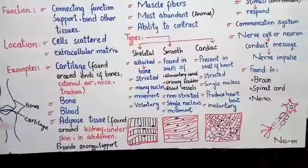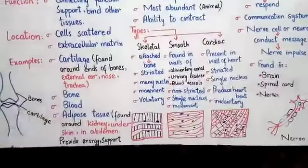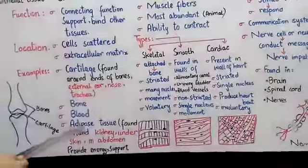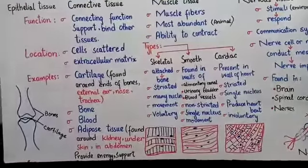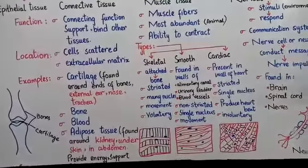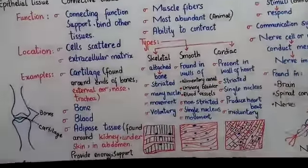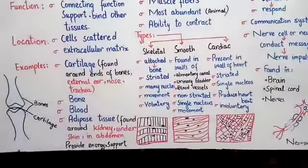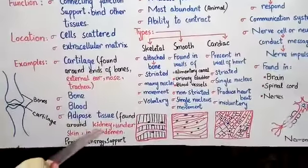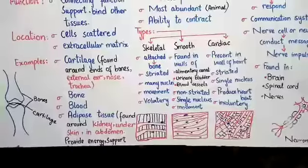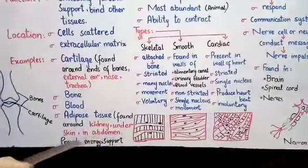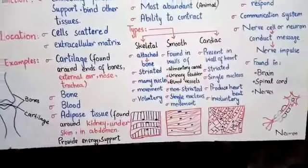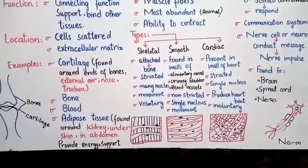The last connective tissue we discuss is adipose tissue. Adipose tissue is present in our body and is made from connective tissue. Adipose tissue is found around the kidneys, under the skin, and in the abdomen and belly region.